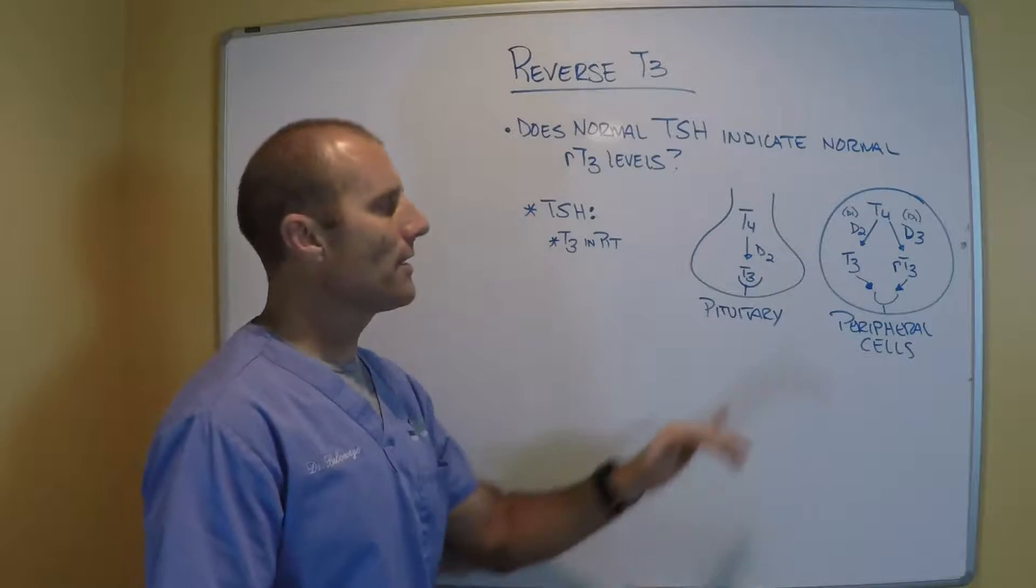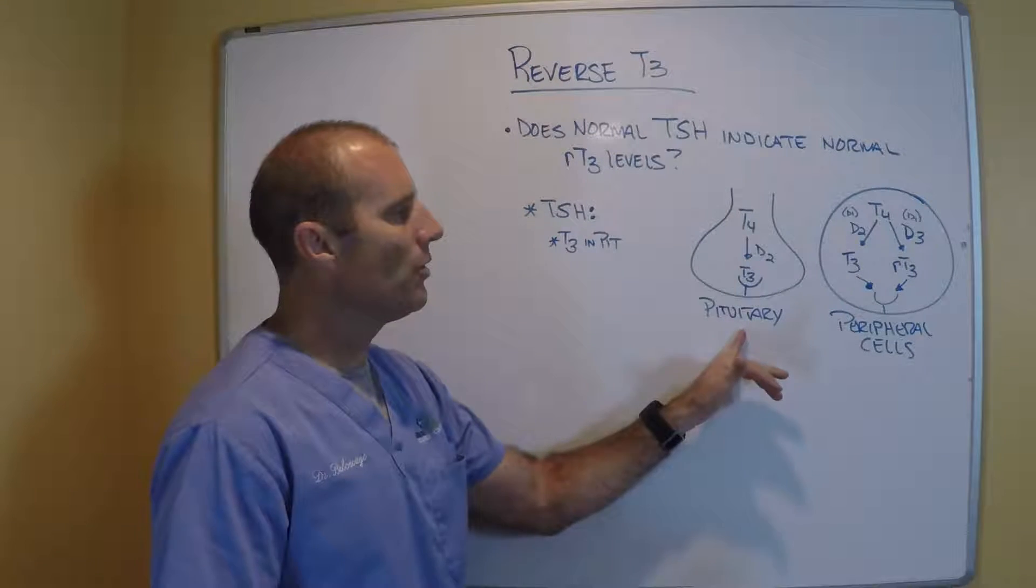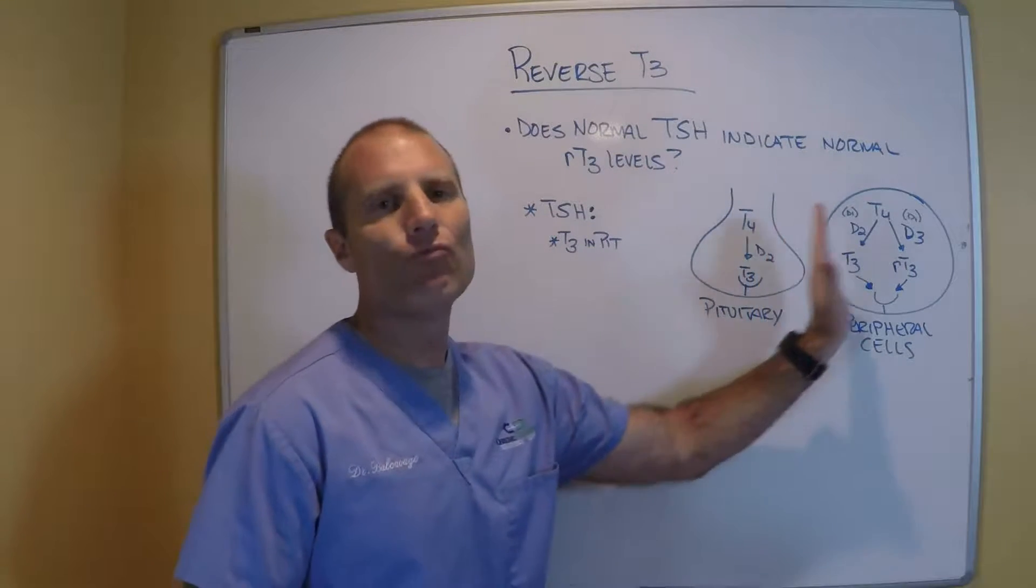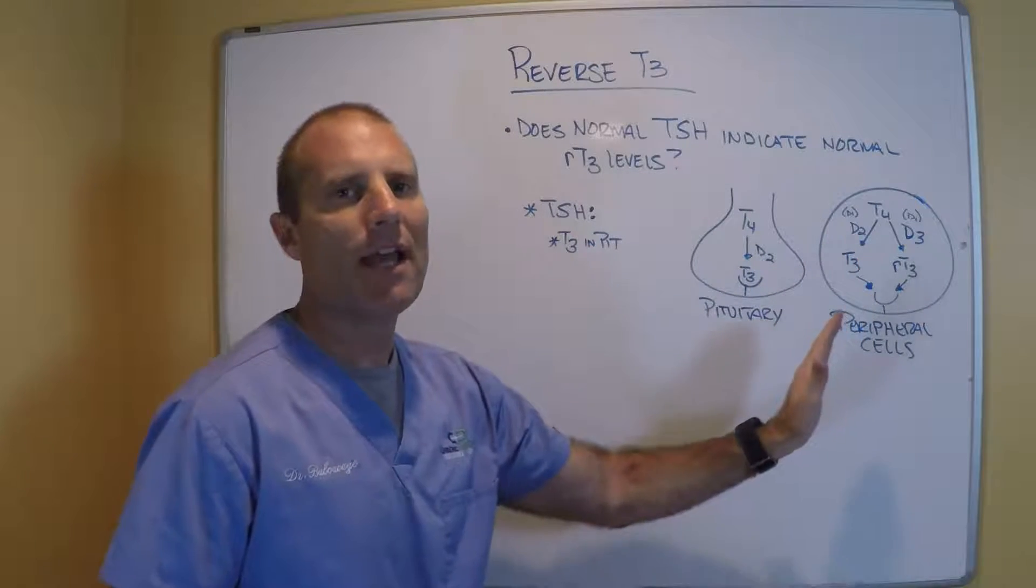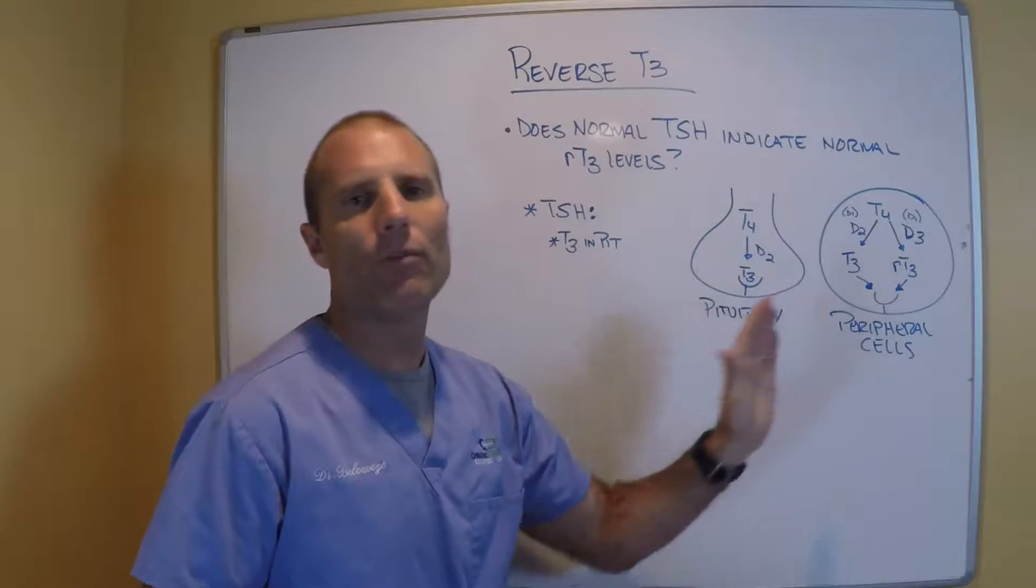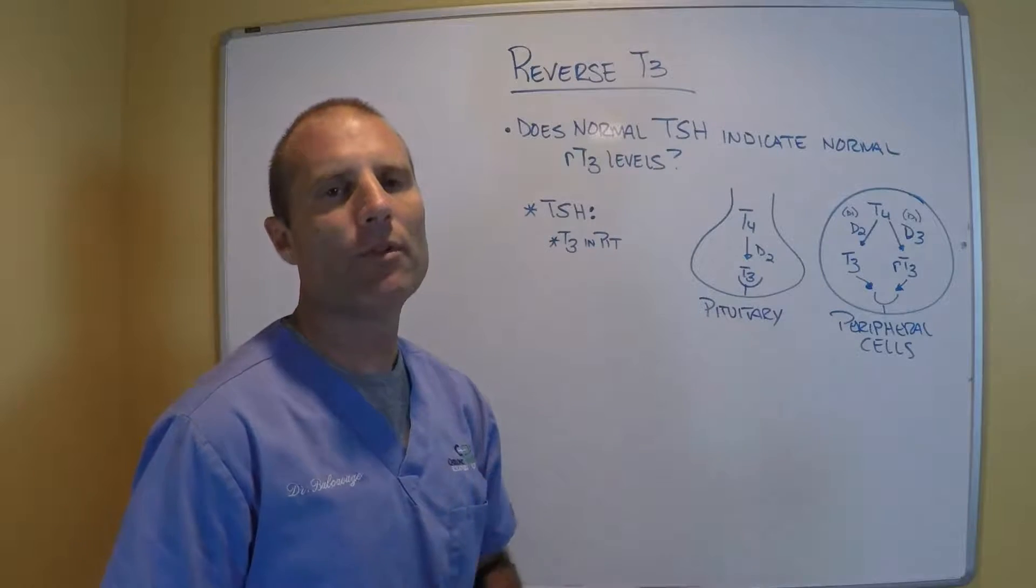Which is why TSH reflects the saturation of T3 at the pituitary level but does not represent the T3 saturation at the peripheral cellular level. And we're going to say that that's anywhere away from the pituitary gland.